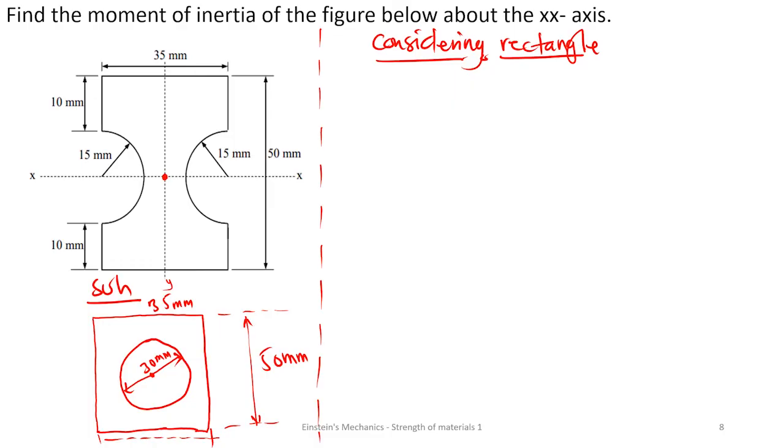All this I explained in the centroid and moment of inertia video. So you can go back and refer. Here it is at the center, so we have to apply our formulas. For a rectangle, the moment of inertia about the x-axis is going to be the base times height cubed over 12.